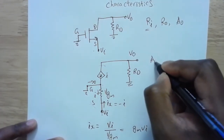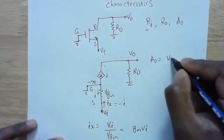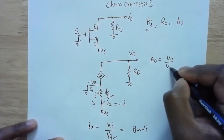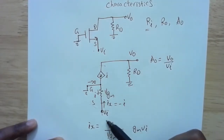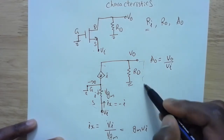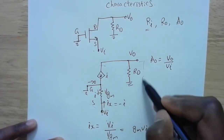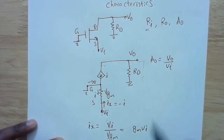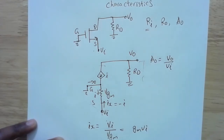Next, let's look at the open circuit voltage gain Ao, which equals VO divided by VI. This is the open circuit gain because I'm not connecting any load resistance — the output is open.